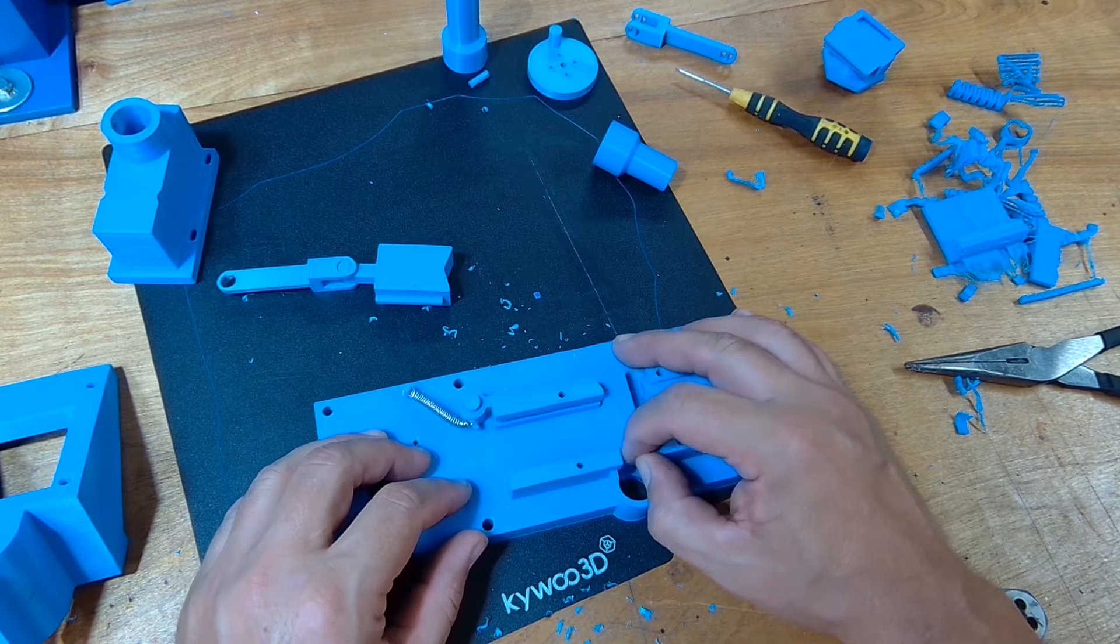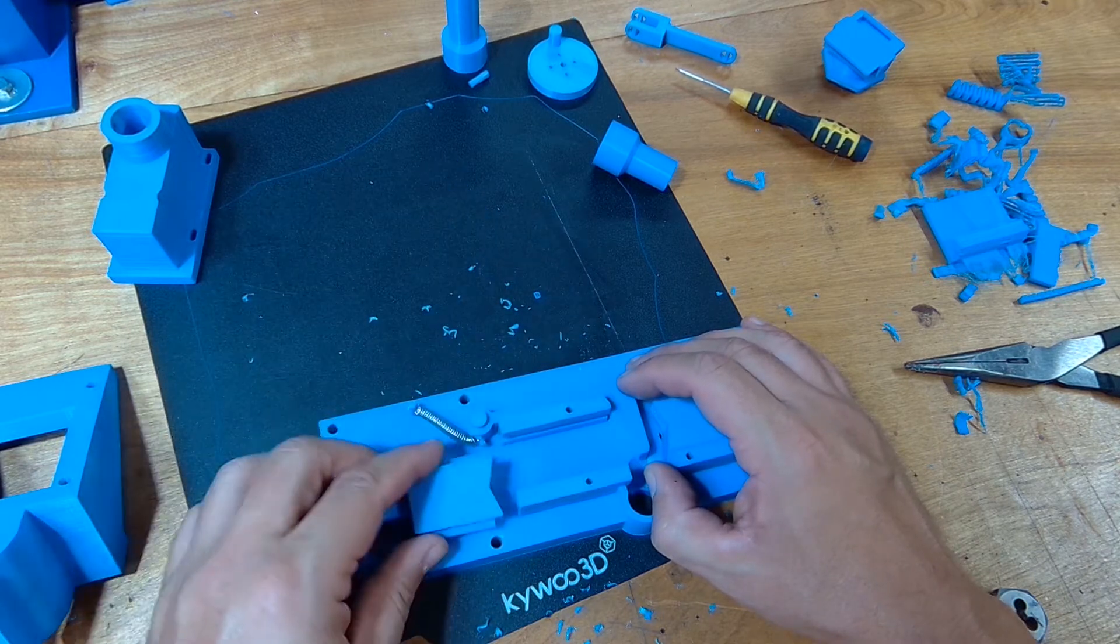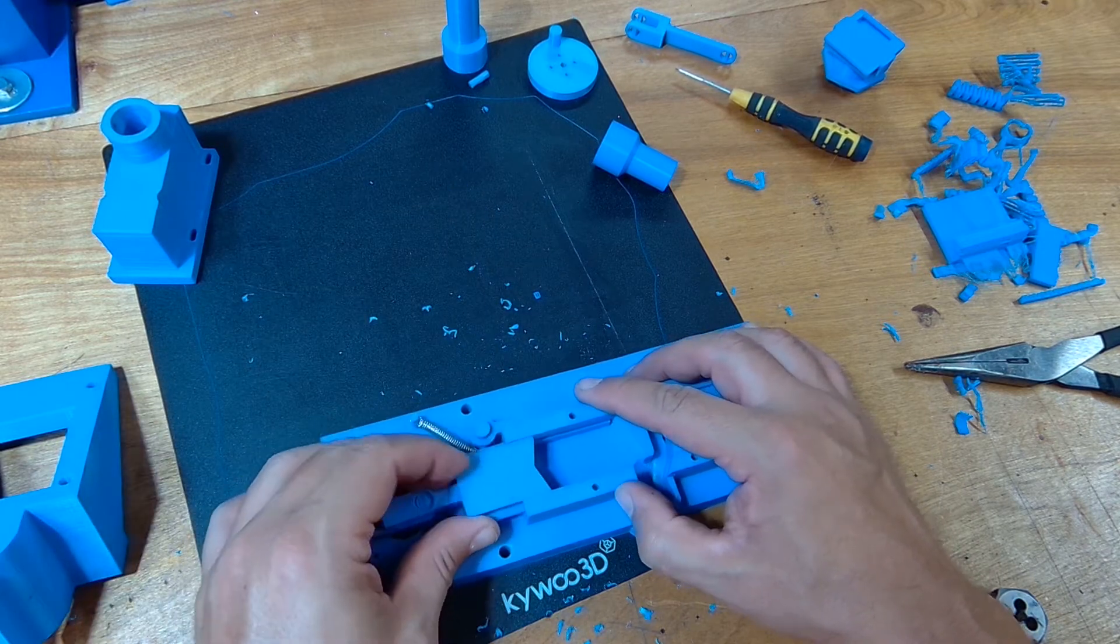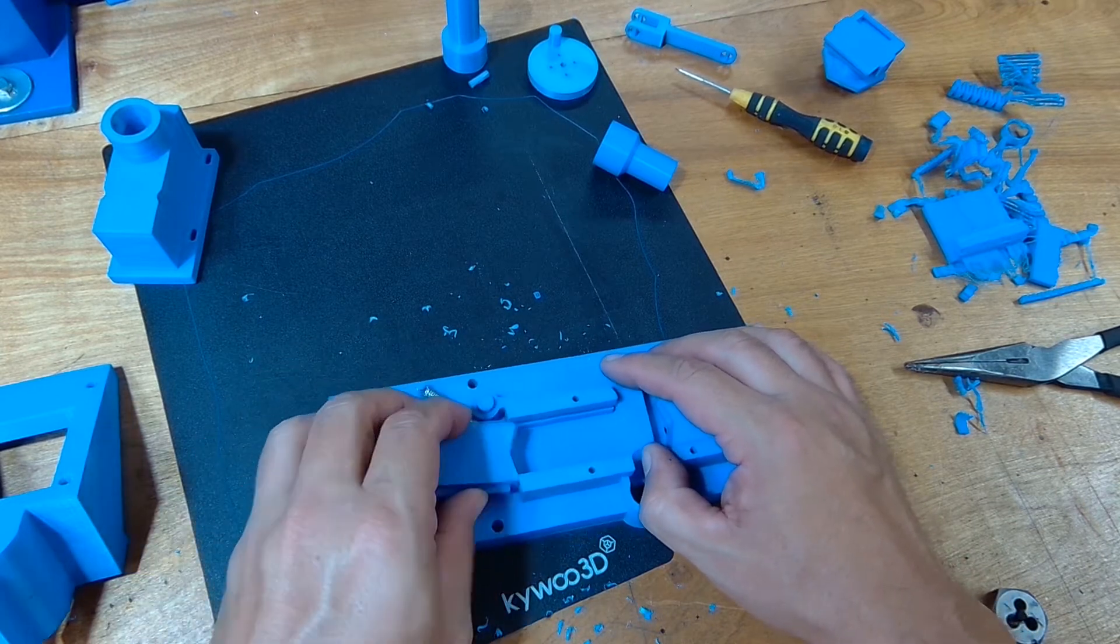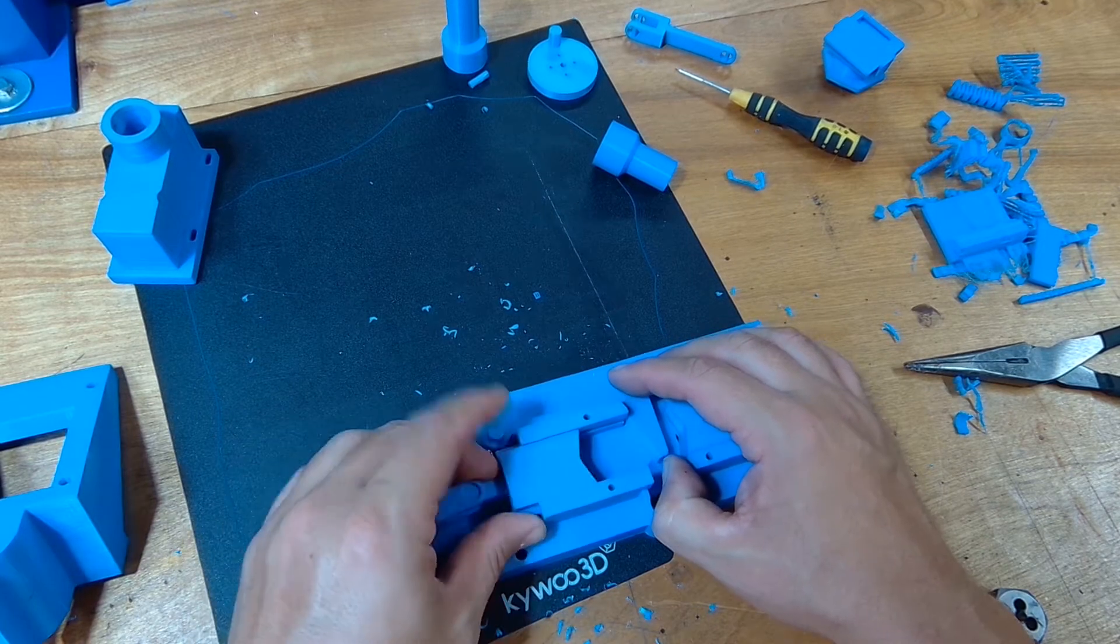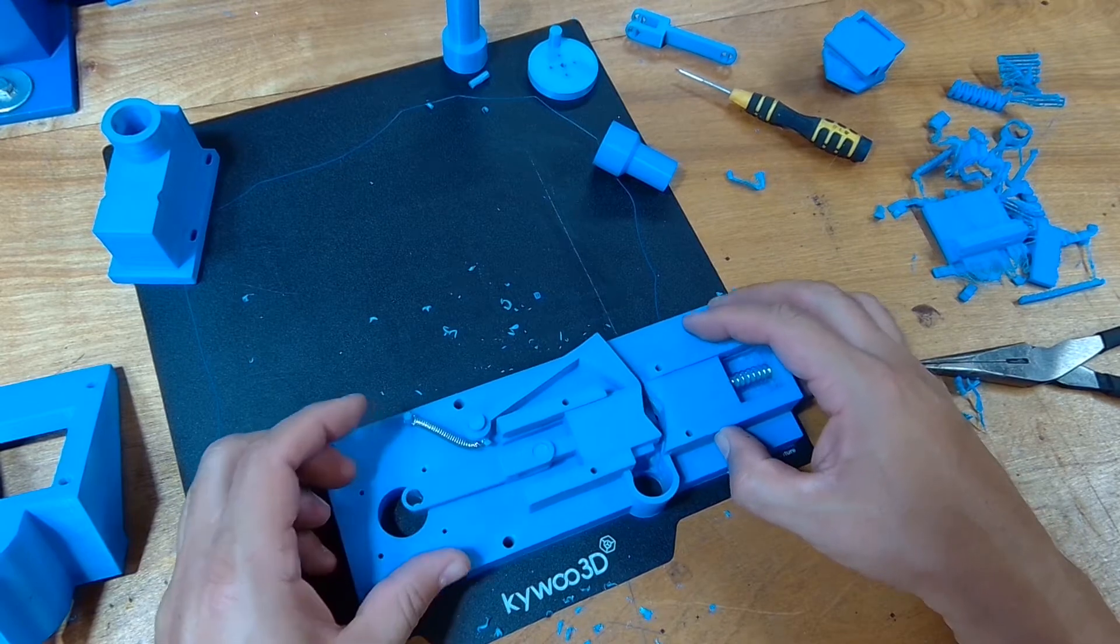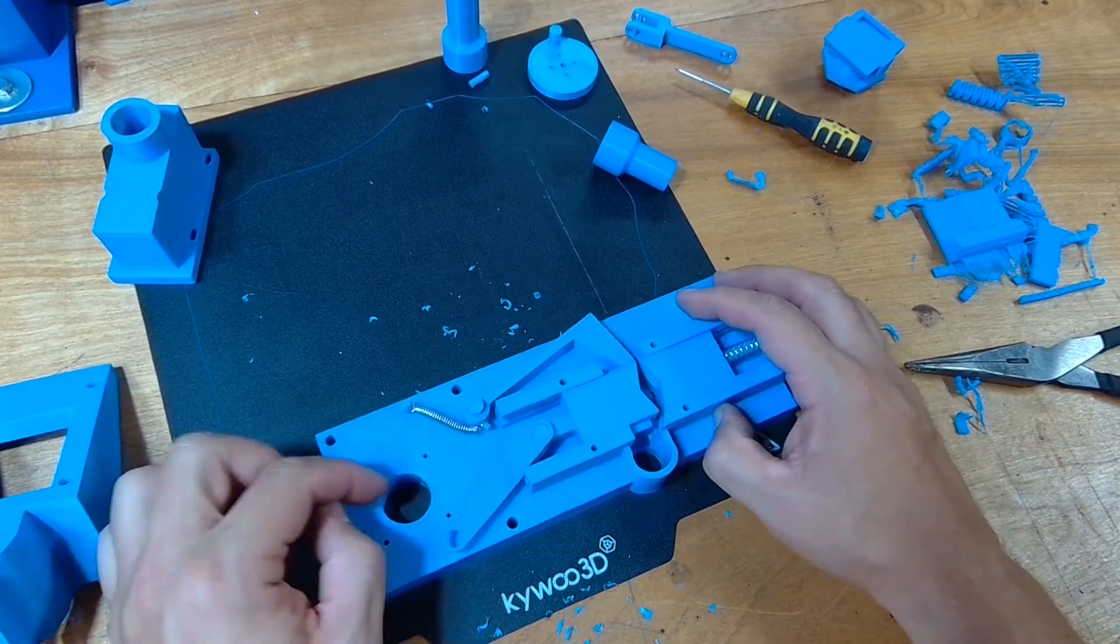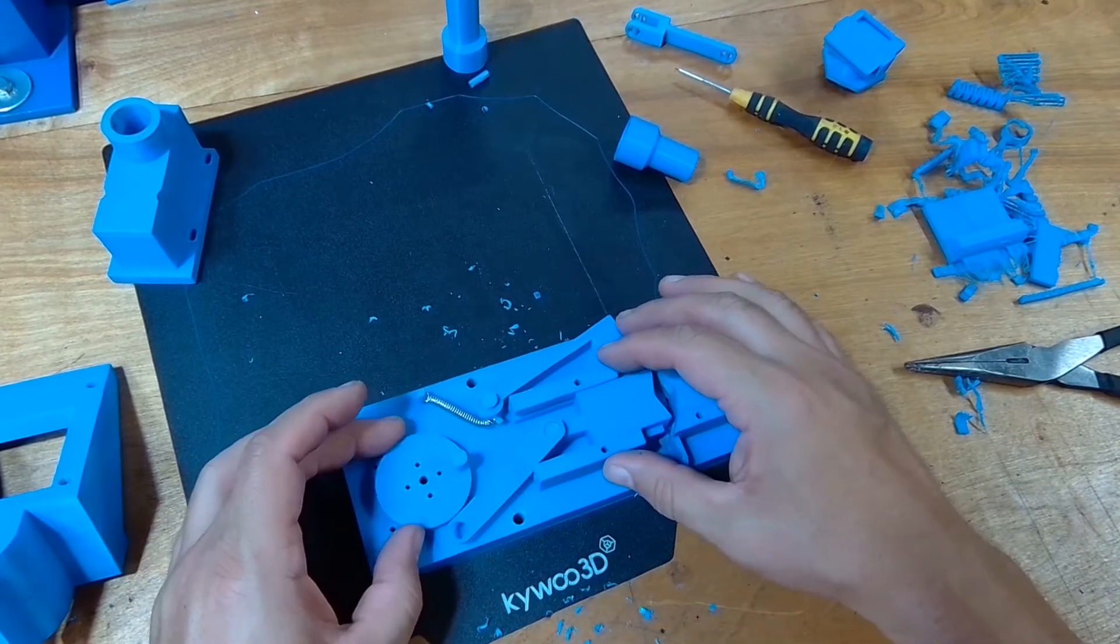So we're probably going to have to pull this up to get this one in. Let's see. Now it looks like it will slip in just barely. All right, and then finally we've got to put our wheel and our motor on.